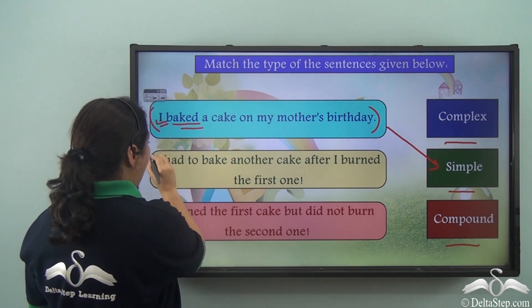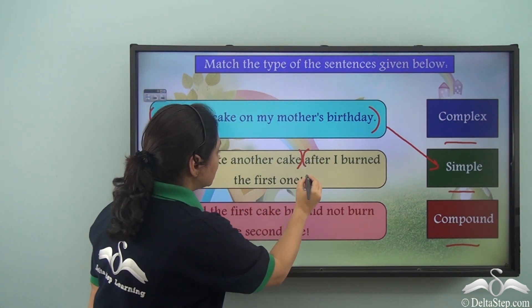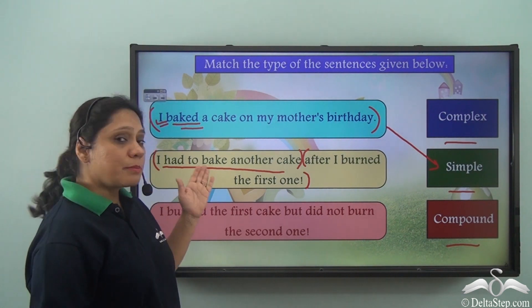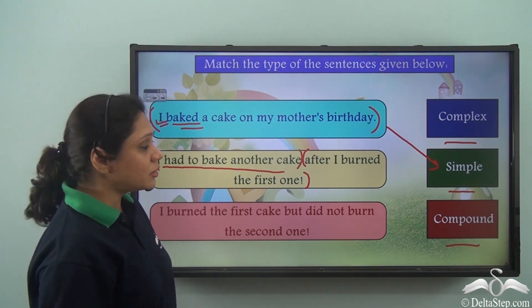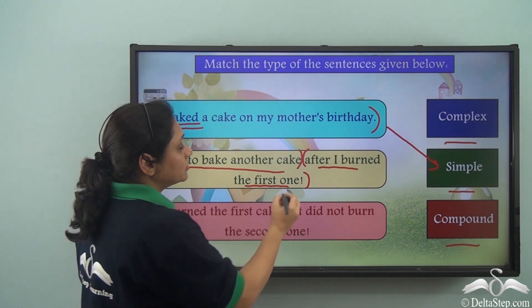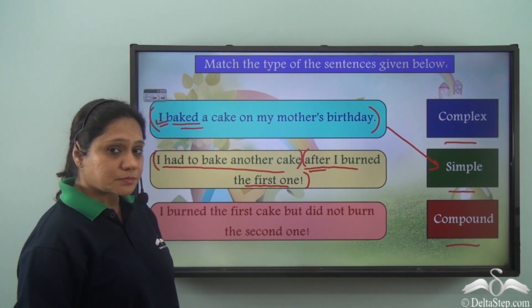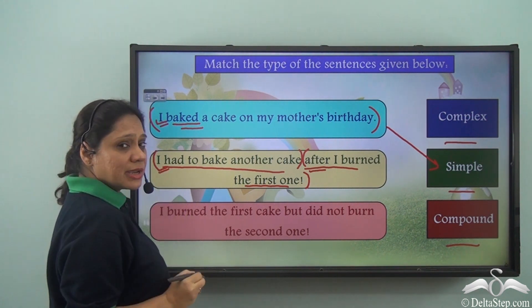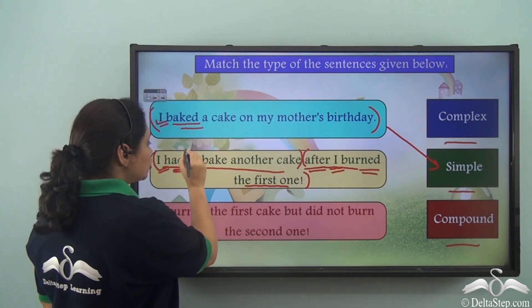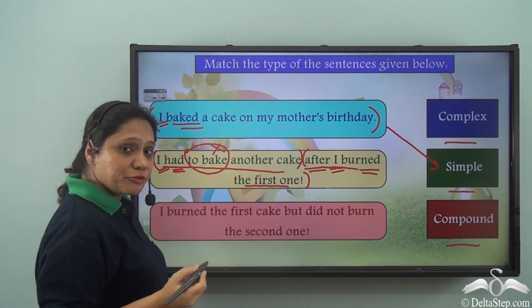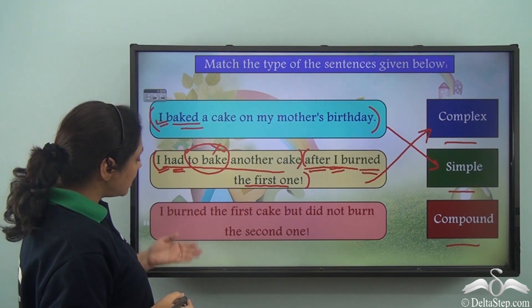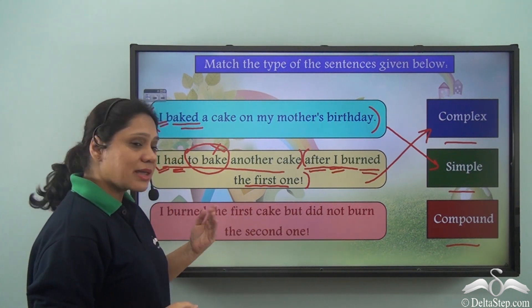The second sentence, 'I had to bake another cake after I burnt the first one', has two clauses. 'I had to bake another cake' is an independent clause; 'after I burnt the first one' is a subordinate clause with the subordinating conjunction 'after'. There are two subjects and two finite verbs — 'had' and 'burnt' ('to bake' is the infinitive form, not a finite verb). So this sentence is a complex sentence.